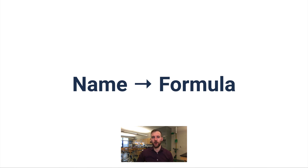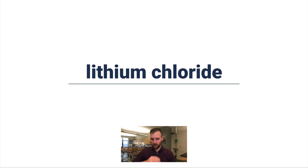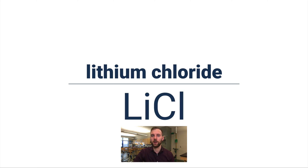What if we went in the opposite direction — name to formula? If I gave you the name, could you figure out the formula? That's a little trickier, because you really have to look at charges and then swap them. Let's do lithium chloride. Lithium is in group one, so when it becomes an ion it develops a plus one charge. Chloride is in group 17 and develops a minus one charge. Write Li+1 Cl-1, crisscross them, and the formula is LiCl.